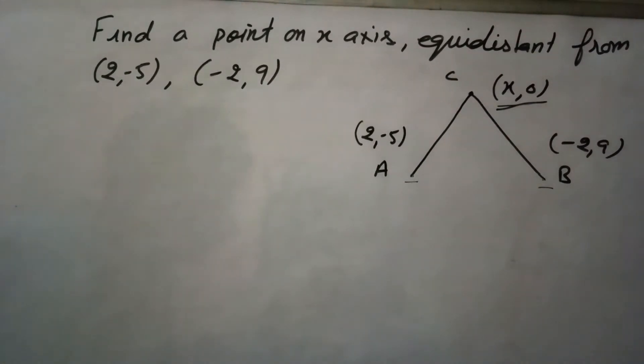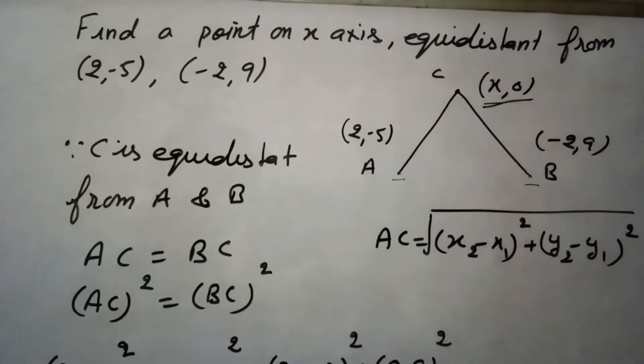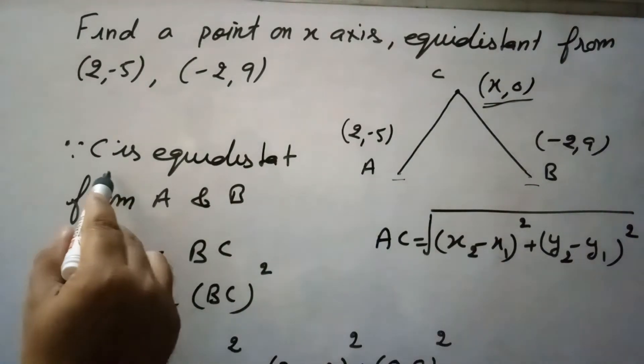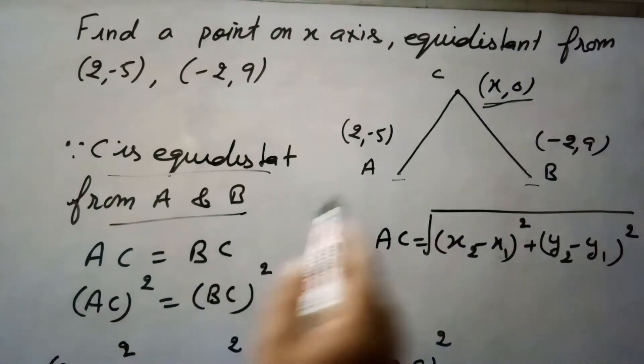So here we will use distance formula AC equals BC, and we find the value of x here which will be the coordinate. So now here, because C is equidistant from A and B, by using distance formula AC equals BC.